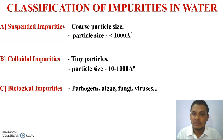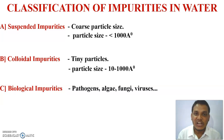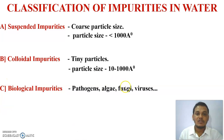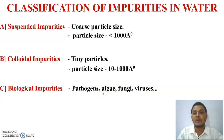The third type is biological impurity. Biological impurities present in the water sample include algae, fungi, bacteria, small aquatic animals, and pathogens. These are the biological impurities present in the water sample.